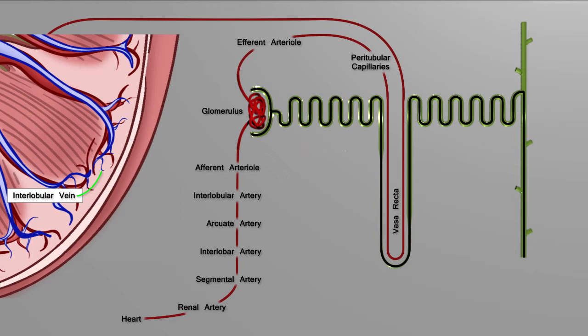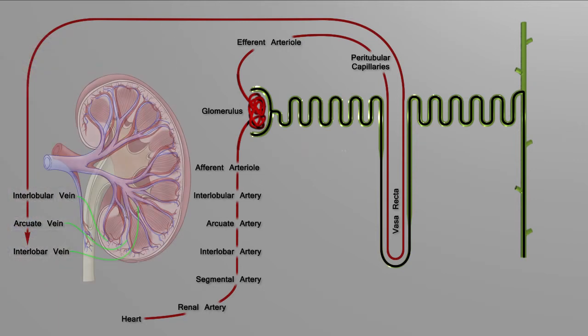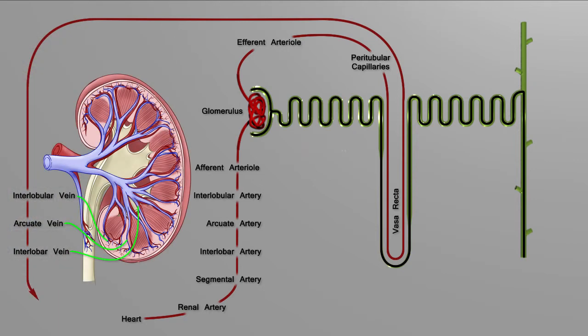From the interlobular vein, we're just doing our flow chart in reverse. Arcuate vein arcs back over top of that pyramid. Then into the interlobar vein, going through that renal column, and then back out through the renal vein. And from the renal vein, it's going to travel through that inferior vena cava back up to the heart.